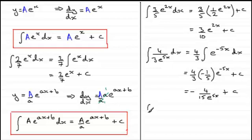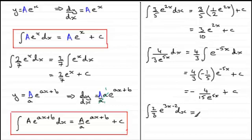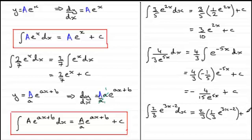What about integrating (2/3)e to the power 3x minus 2 with respect to x? Here b equals minus 2 and little a equals 3. Applying the rule, we get (2/3) times (1/3) times e to the power 3x minus 2, plus c. Multiplying out gives two-ninths e to the power 3x minus 2, plus c.